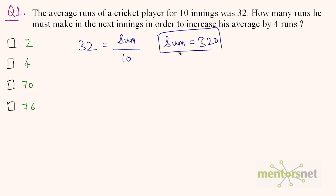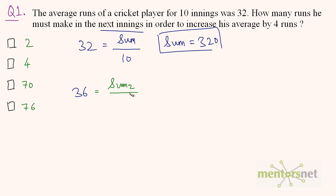We have the sum of runs for the first 10 innings. Now, for the next part of the question: the average must increase by 4, so the new average is 32 plus 4 equals 36. Using the formula sum divided by count, the sum for 11 innings — let's call it Sum 2 — divided by 11 equals 36. So Sum 2 equals 36 times 11, which is 396.